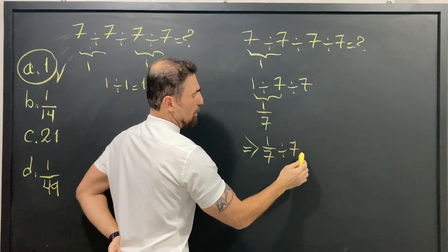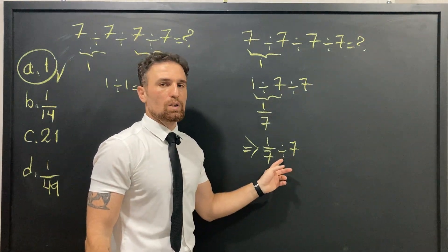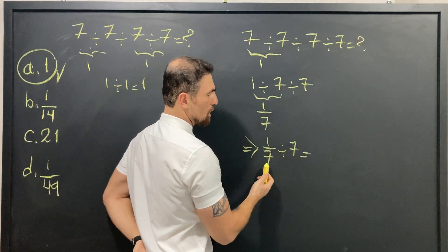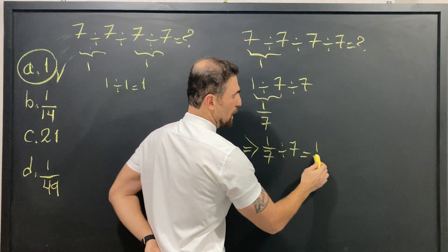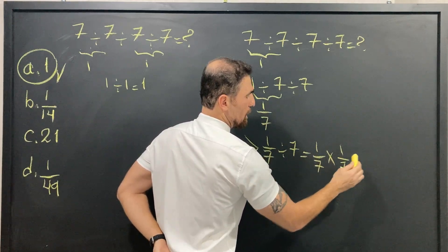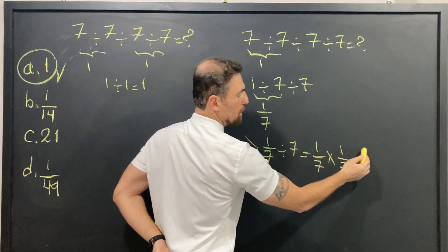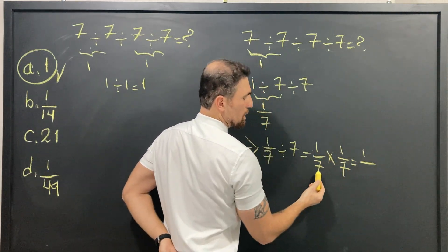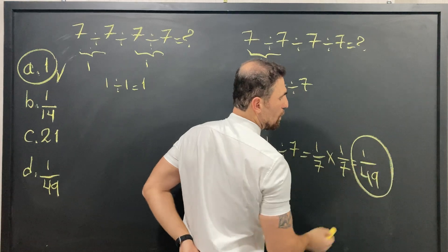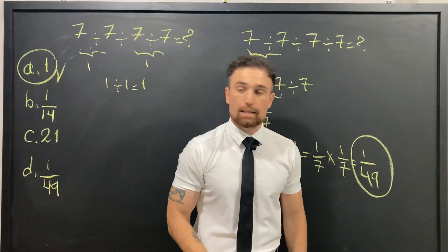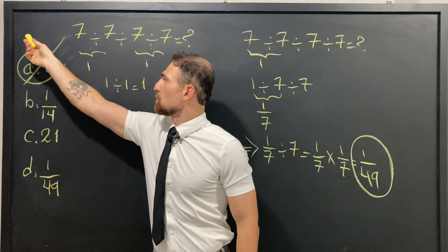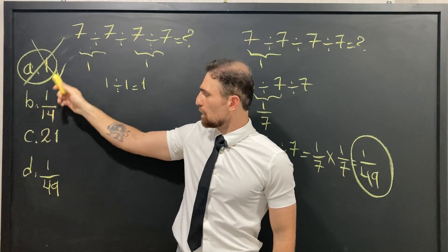Now we have 1/7 ÷ 7. With only one division, we convert it to multiplication: 1/7 × 1/7. Solving this: 1 × 1 = 1 and 7 × 7 = 49, giving us 1/49 as the correct answer.